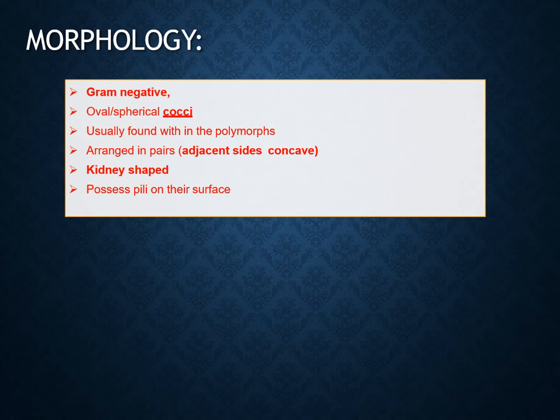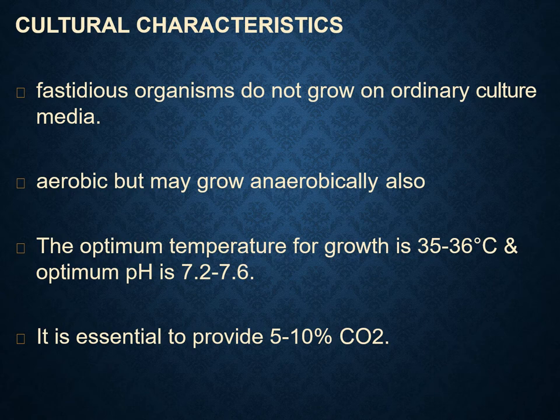The gonococci is a gram-negative cocci. It is oval or spherical in shape and it is usually found within the polymorphs. It is arranged in pairs, so sometimes they are said to be diplococci. They are kidney-shaped and they possess pili on their surface.